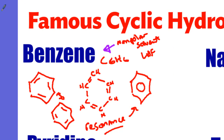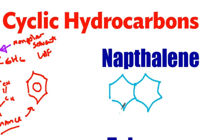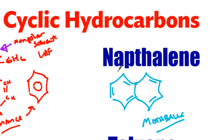Another famous one is naphthalene. Naphthalene looks like two benzene rings kind of put together. Why is naphthalene famous? It is in what we call mothballs. I used to do an experiment with naphthalene, and one time the naphthalene caused a problem — the entire building I was in smelled like mothballs, or your grandmother's closet. The other teachers complained about me, so I found a different substance to do my experiments with.